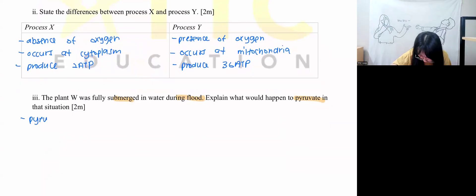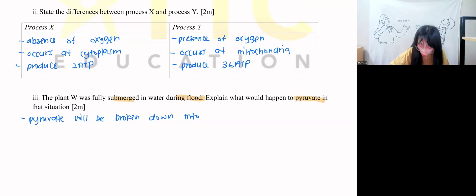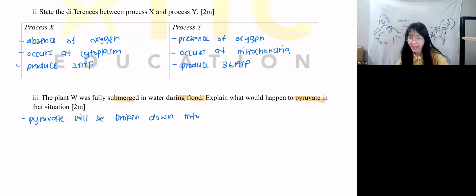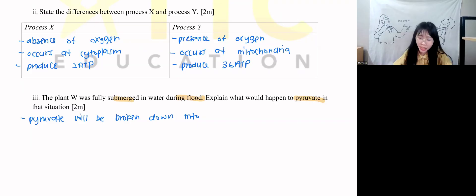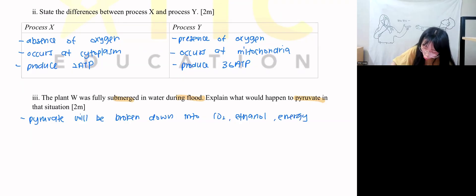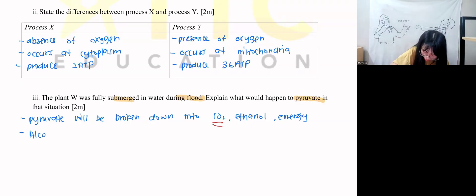Pyruvate will be broken down into three products, because this is an alcohol fermentation. The three products produced are ethanol, carbon dioxide, and energy. In an exam, you cannot write CO2 — you can only write carbon dioxide. So you write that alcohol fermentation occurs.